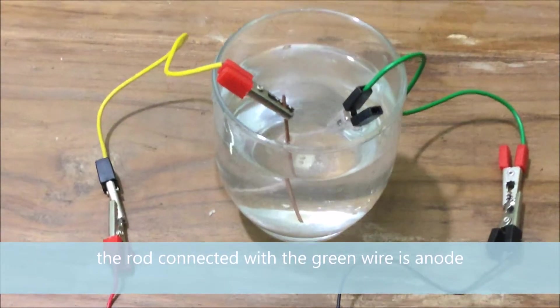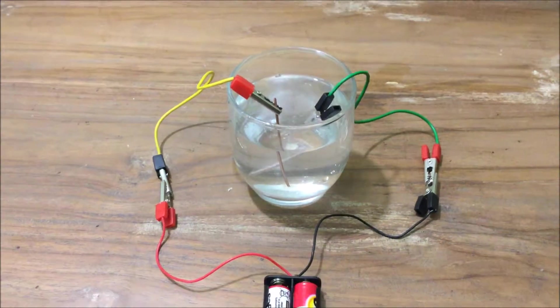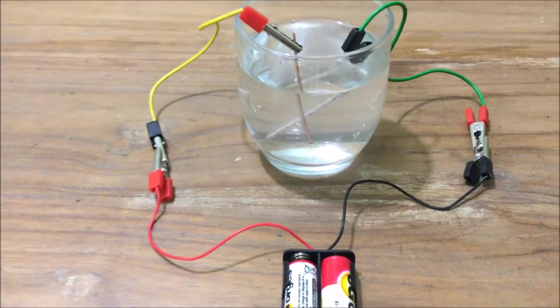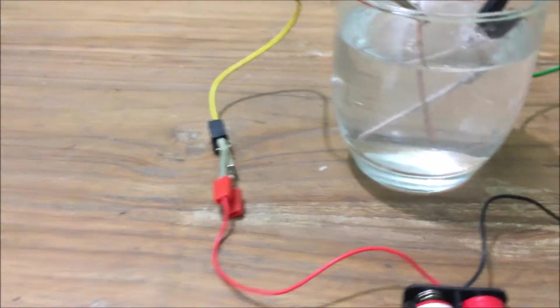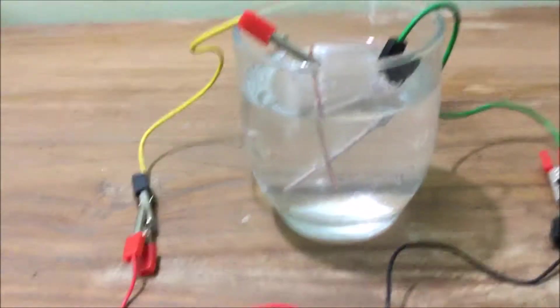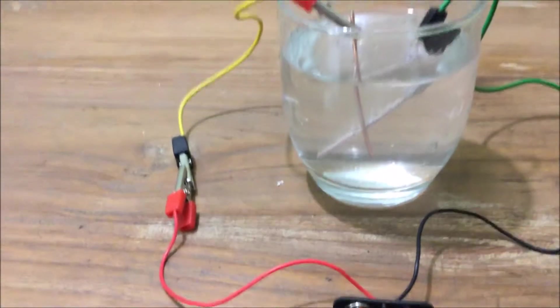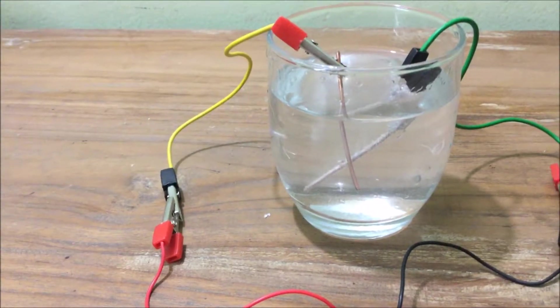If you wait a little you will see that bubbles form on the rods. The chemical name of the salt is sodium chloride. When sodium chloride is dissolved in water, sodium ions and chloride ions are separated and they move about freely.